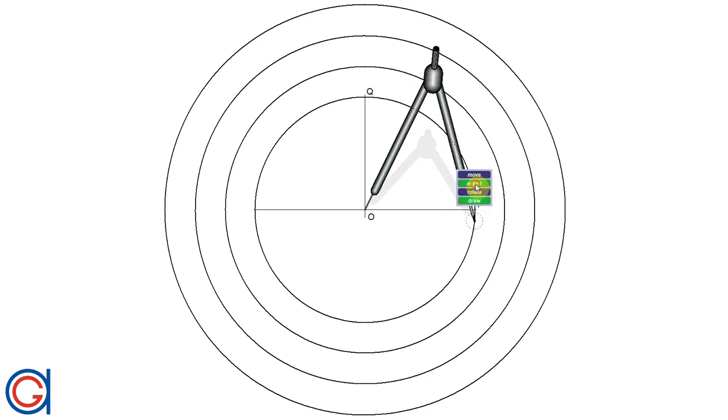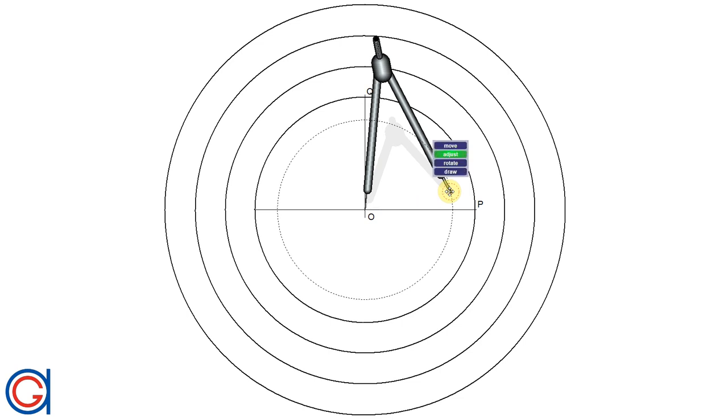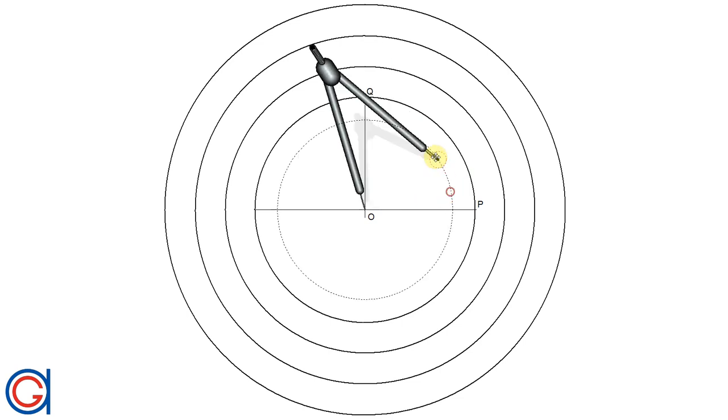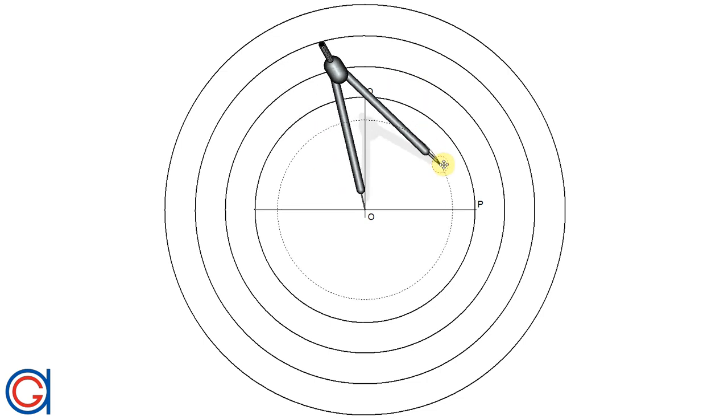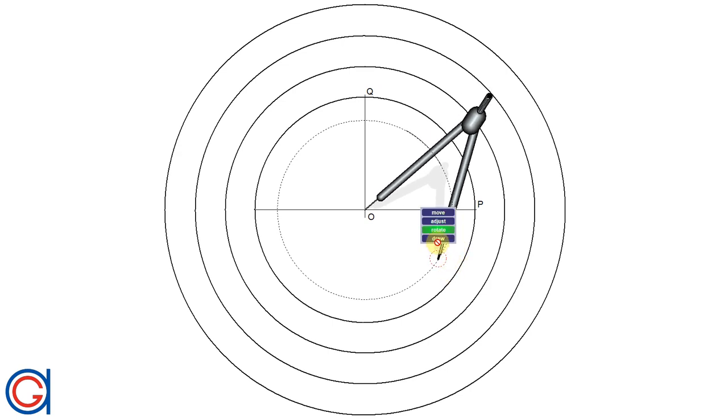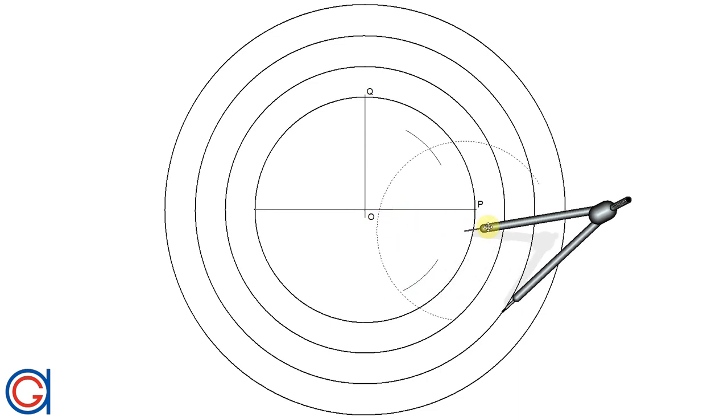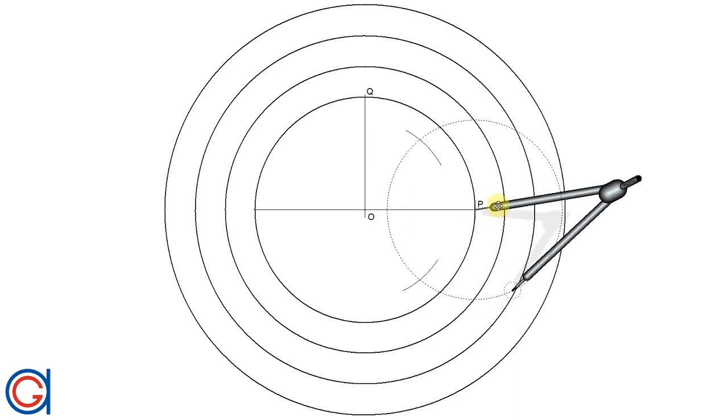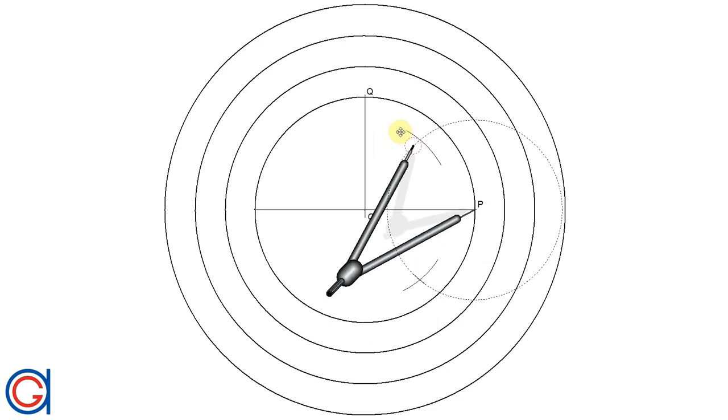And now the next step: we are going to calculate the perpendicular bisector of the radius OP. To do this, with our compass set on point O and a radius slightly greater than half of the radius OP, we scribe an arc above and below the radius. And now with the same radius and the compass centered on point P, we'll scribe another arc above and below which intersects our previously drawn arc at two points.